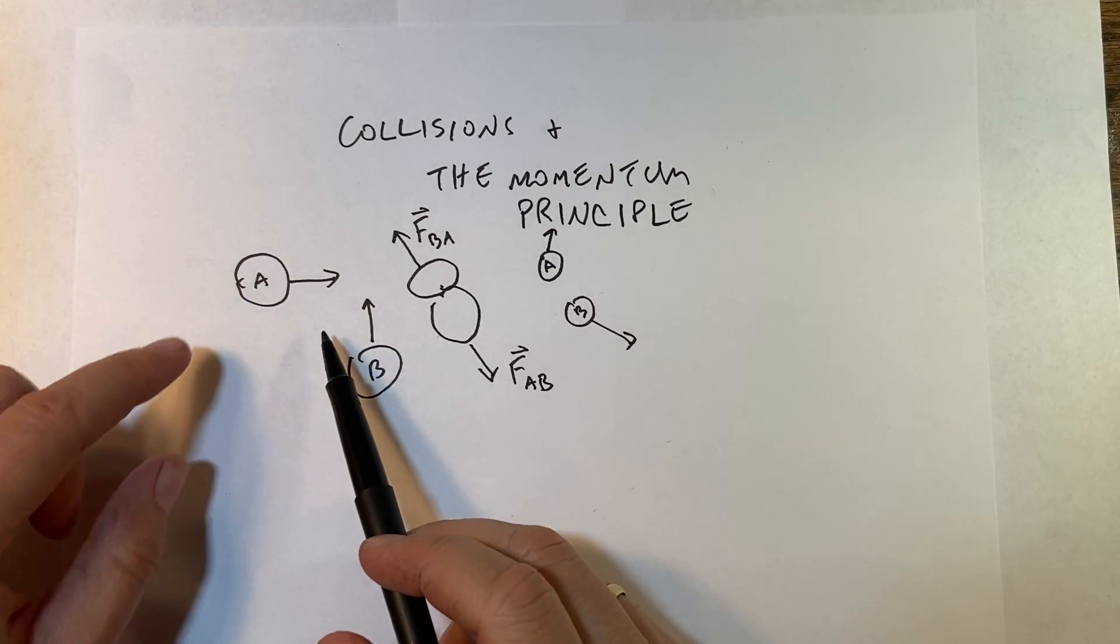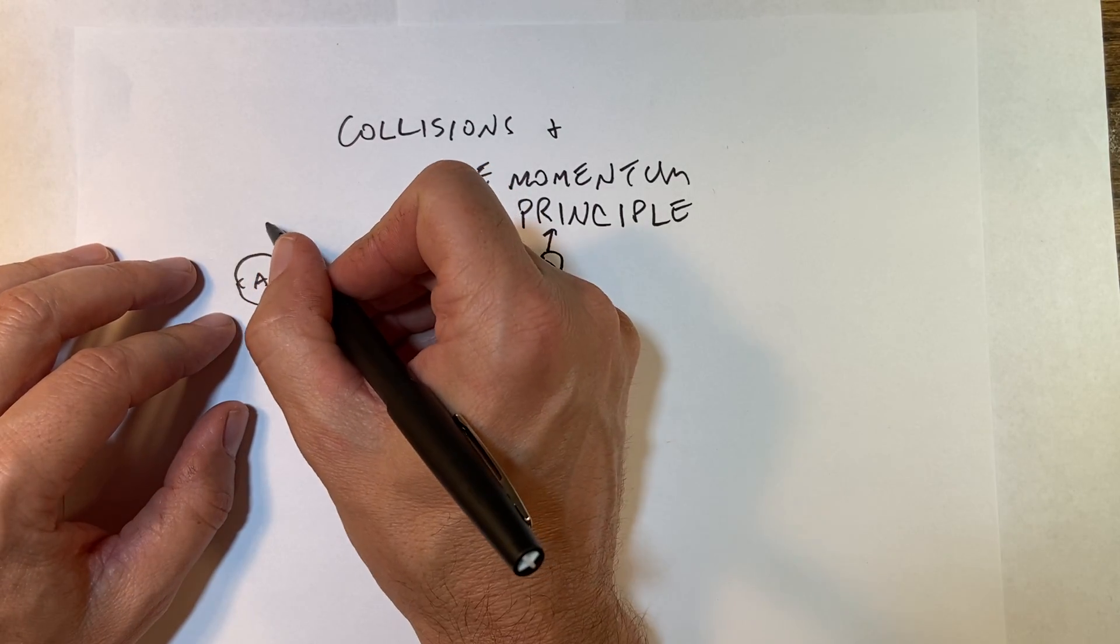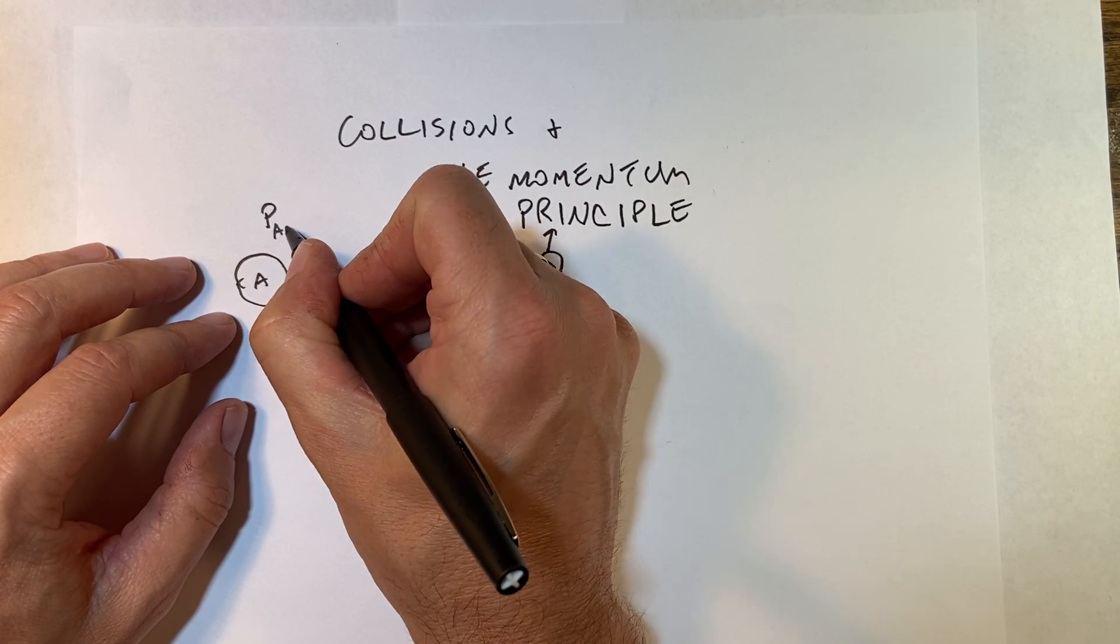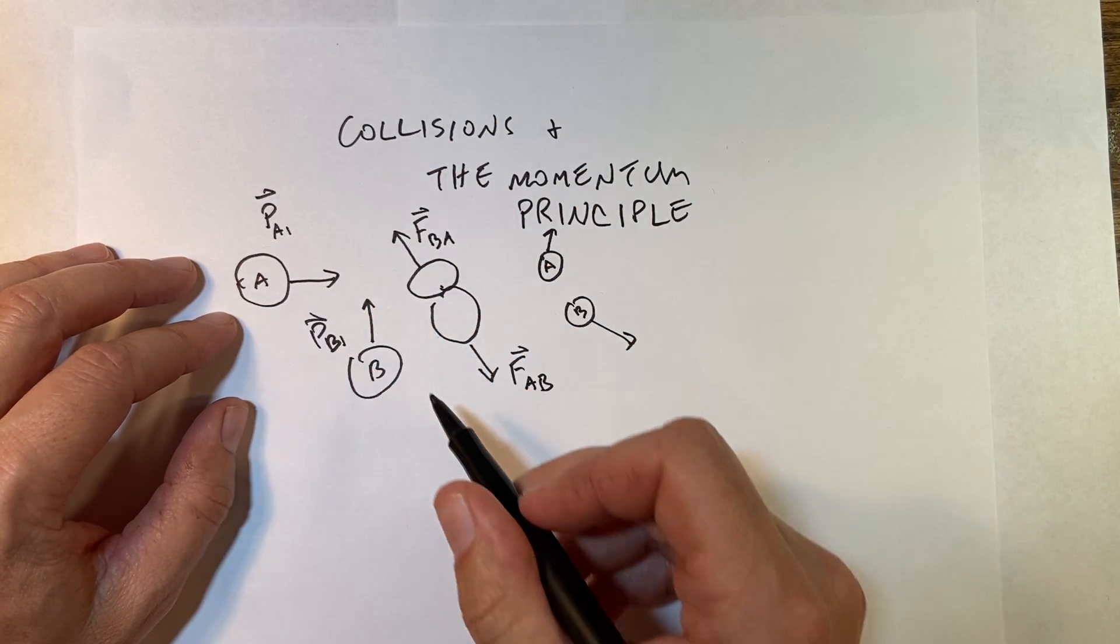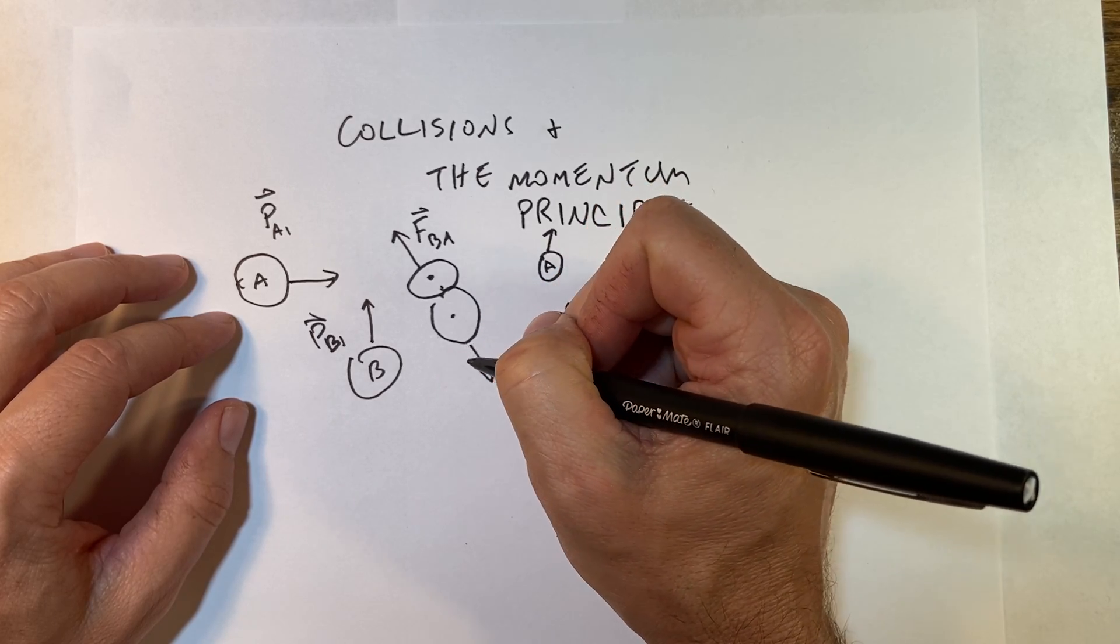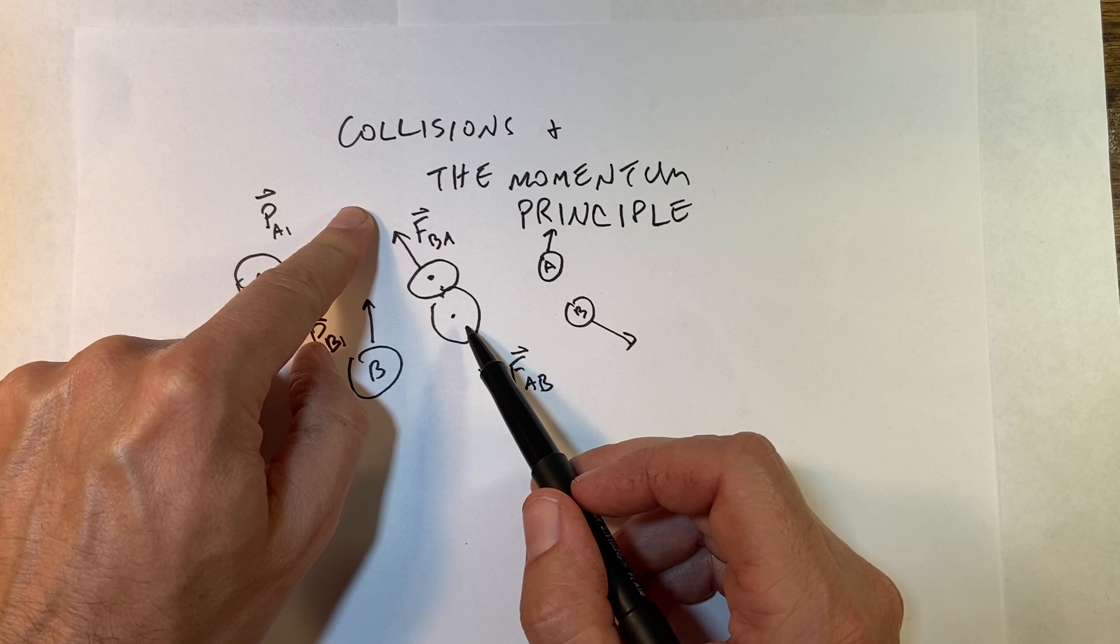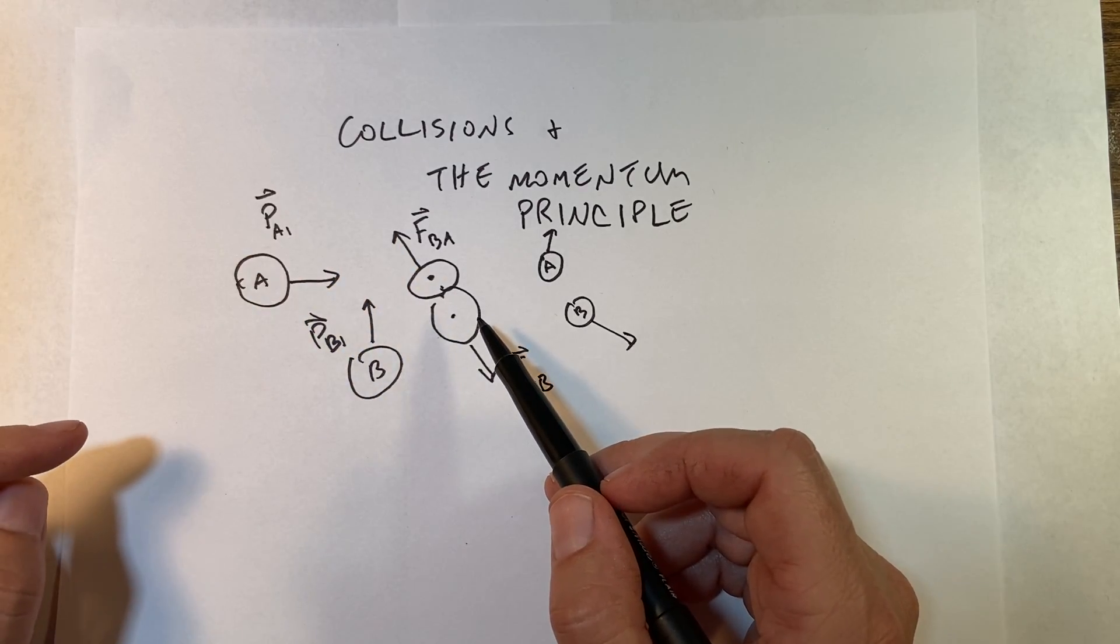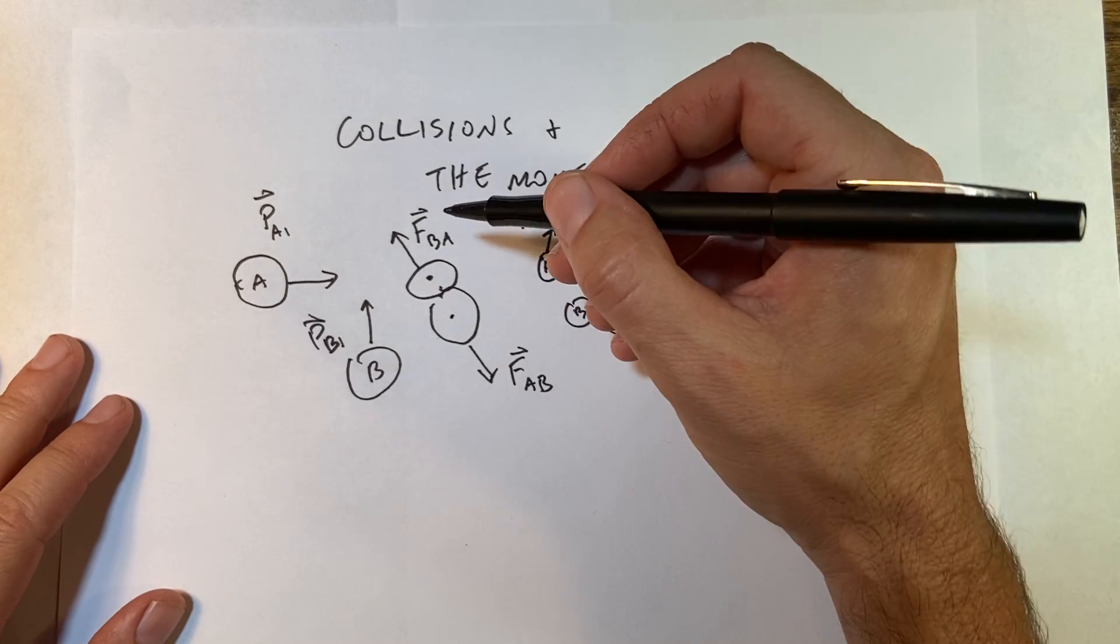But let's just talk about collision. I have here two balls A and B, and they're moving with some initial momentum, so p_A1, p_B1. Then they collide, and when they collide they push on each other. Ball B pushes on ball A this way, but since forces are always an interaction between two things, then object A has pushed back on B with the same magnitude force but in the opposite direction.